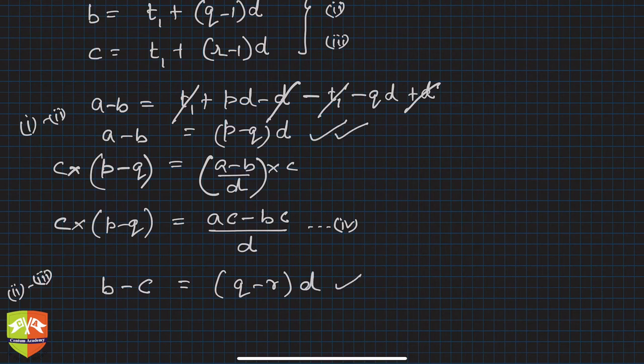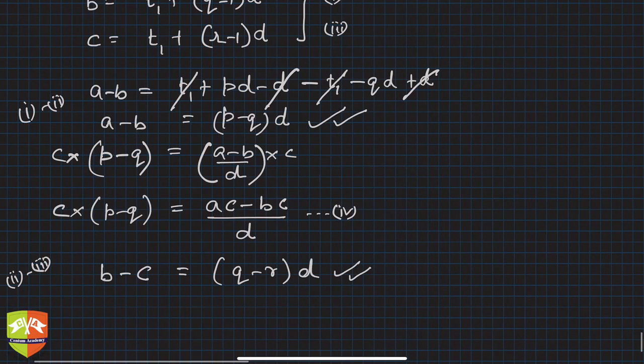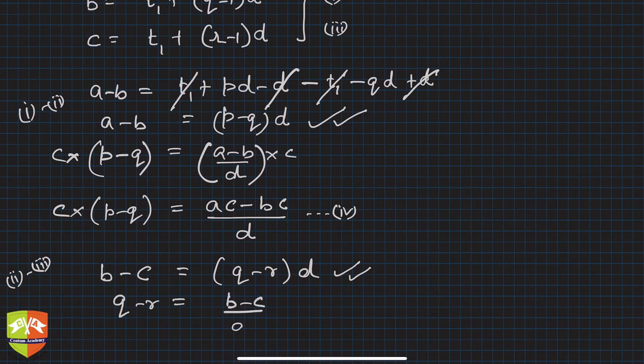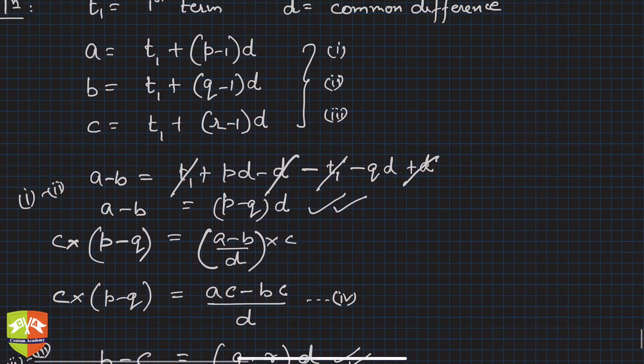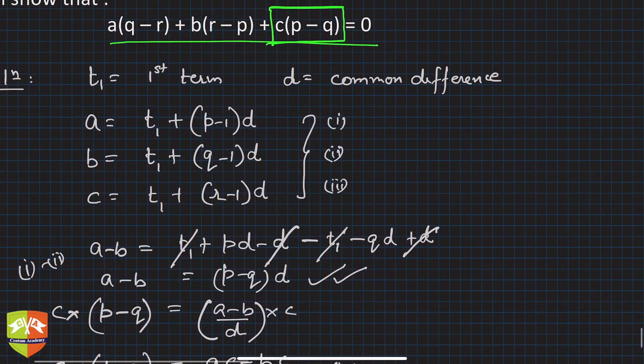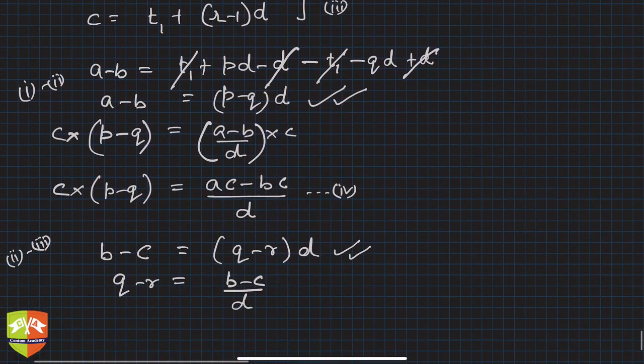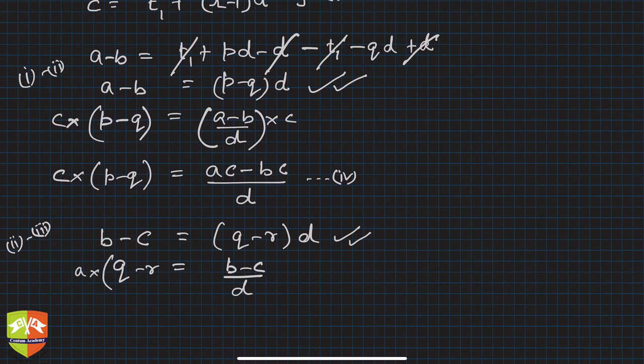Cyclical expression: b-c = (q-r)d. So q-r will be (b-c)/d. And let's go back to the expression which we wanted. We want a times (q-r), so we can multiply both sides by a.